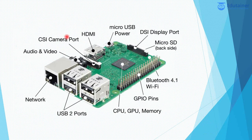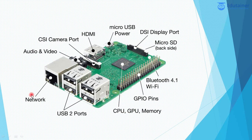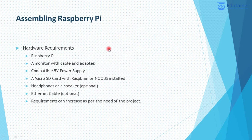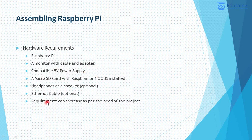This is the detailed diagram of all the components that are present on the Raspberry Pi board. For assembling, you need some hardware components like a monitor with cable and adapter, a micro SD card, 5 volt power supply, and headphones or Ethernet cable, which are optional. The requirements can change as per the need of your project.